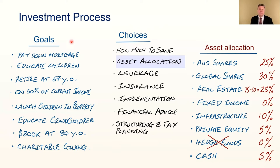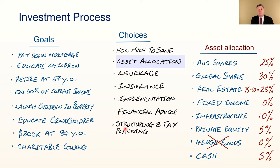Among our choices to reach goals: first, how much to save. Second, asset allocation — the what of strategy. Leverage and insurance are the how of strategy, managing risk. Structuring and tax planning is the where of strategy. Implementation is an absolutely crucial part of the process — it's not enough to work out a strategy, it also has to be implemented.